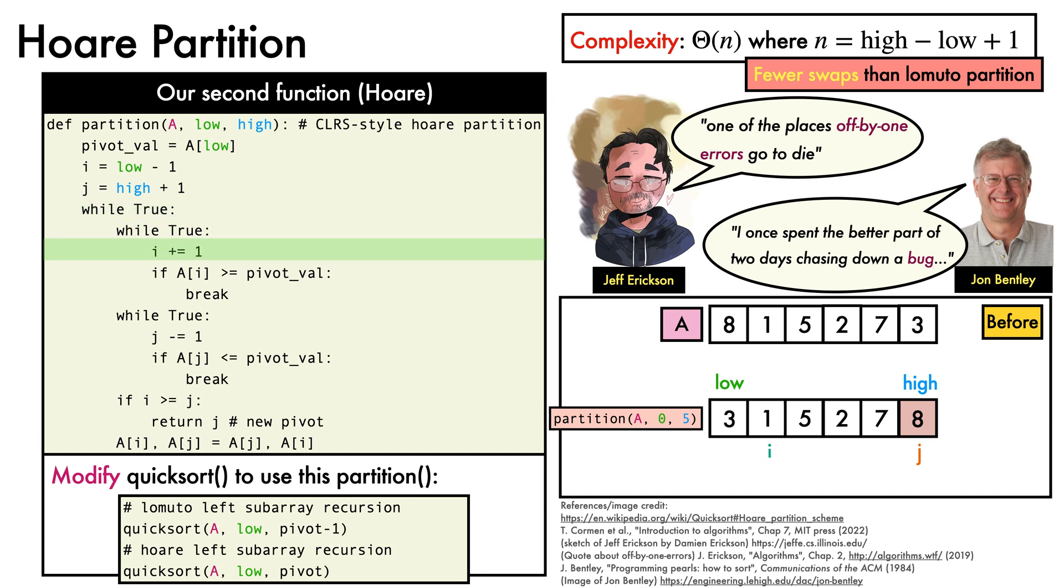We go back into the first while loop, which this time increments i all the way up to the end of the array before breaking out when it reaches the value of 8, which is simply the original pivot value. Then we decrement j, see that the condition evaluates to true, and break out of the loop. Now, i is greater than j, so we return j as the new pivot. Items in the left subarray are less than the new pivot value, and items in the right subarray are greater. We are done.